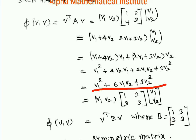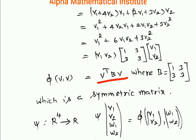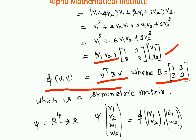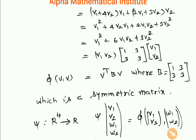This is a quadratic form in V1 and V2. The matrix representation of this quadratic form is V transpose BV, where the diagonal entries are the coefficients of V1² and V2², which are 1 and 3 respectively, and the off-diagonal entries are each half the coefficient of V1·V2 — that is, half of 6, which equals 3. So B equals the matrix 1, 3, 3, 3, which is a symmetric matrix.